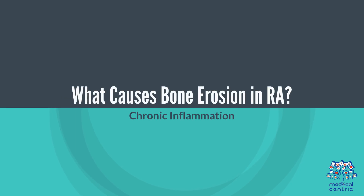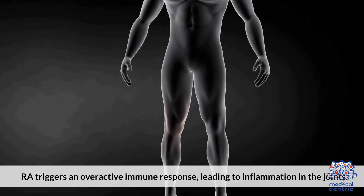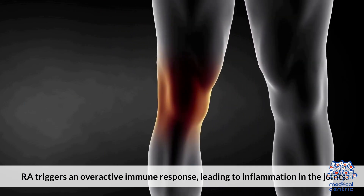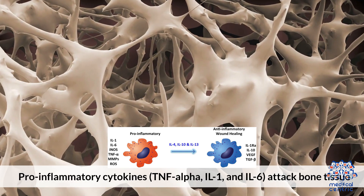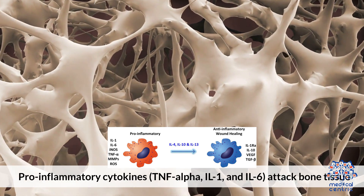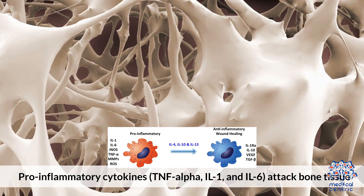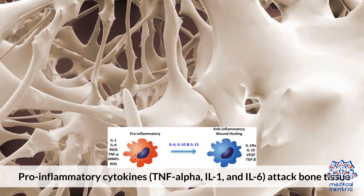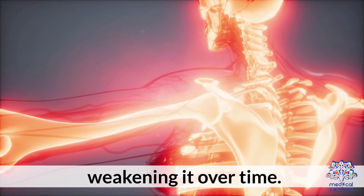What Causes Bone Erosion in RA? First, chronic inflammation: RA triggers an overactive immune response, leading to inflammation in the joints. Pro-inflammatory cytokines — TNF-alpha, IL-1, and IL-6 — attack bone tissue, weakening it over time.